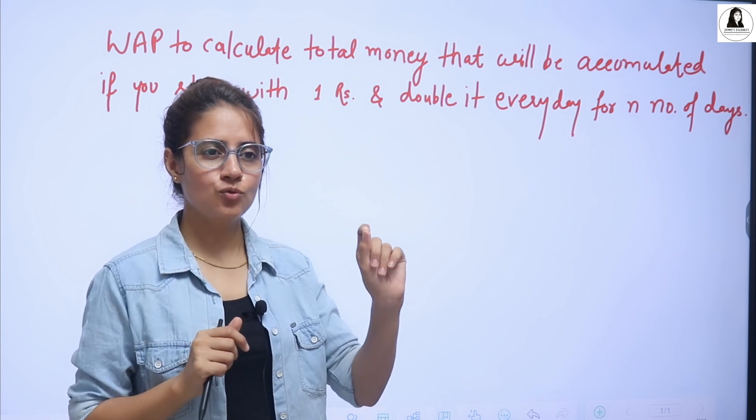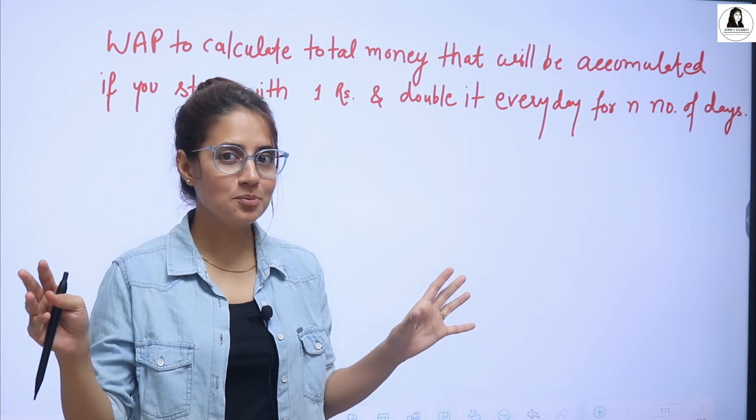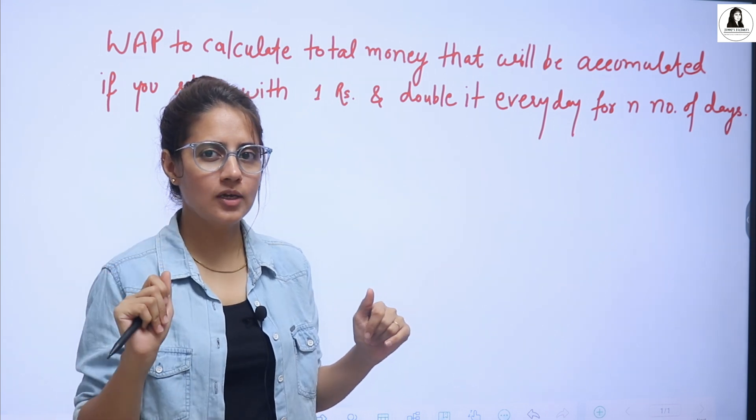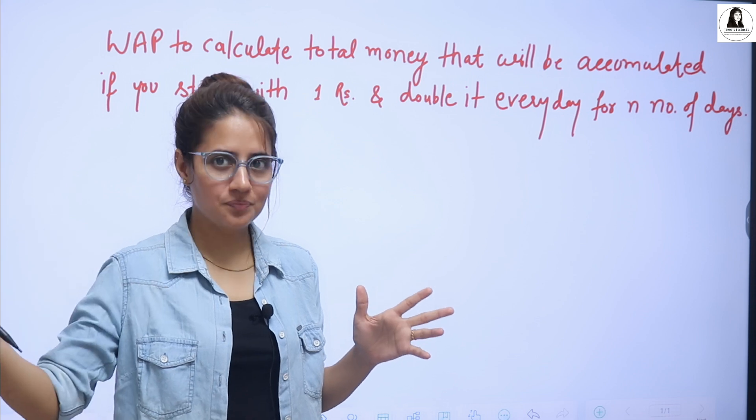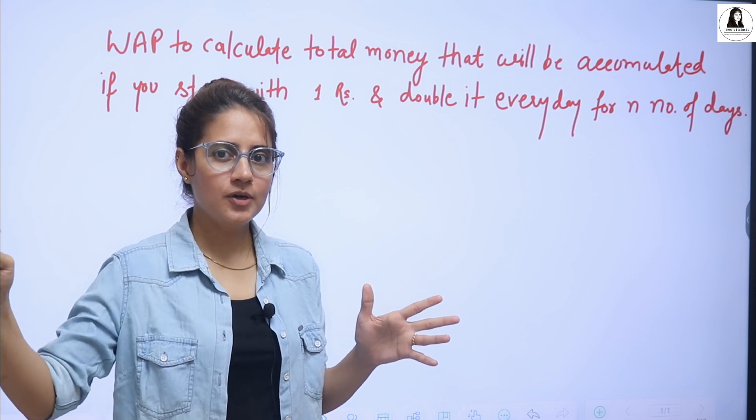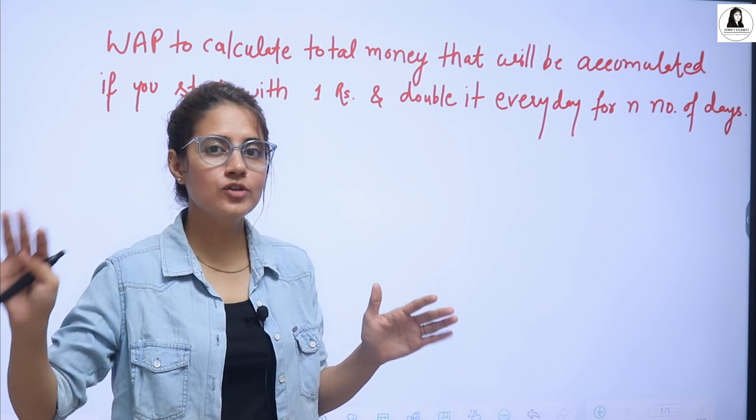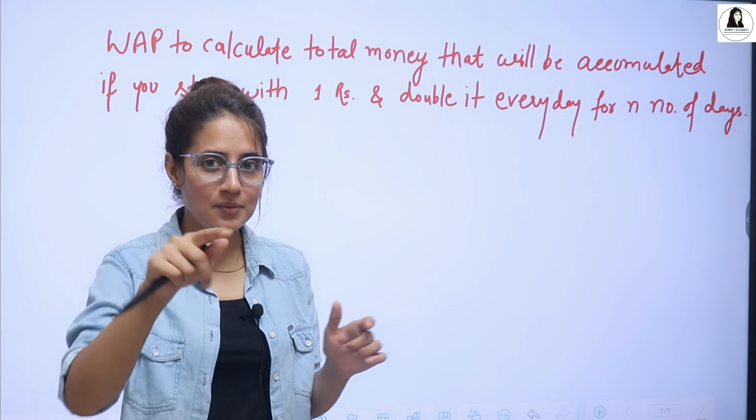One option is today I am going to give you 10 crore rupees. Second option is today I will give you 1 rupee only, but that 1 rupee would be doubled every day. Whenever you wake up, it would be doubled. So which option you will choose? Let me know in comment section.